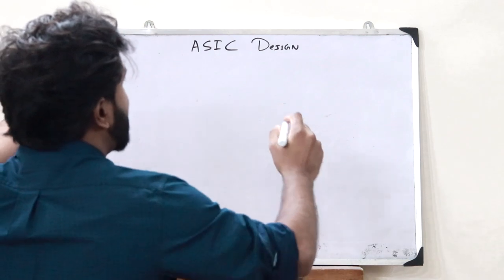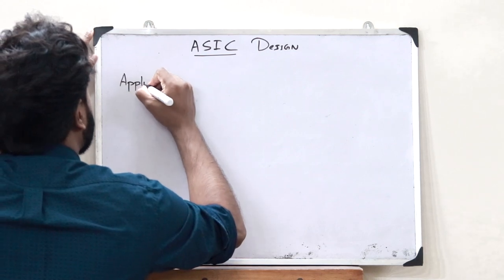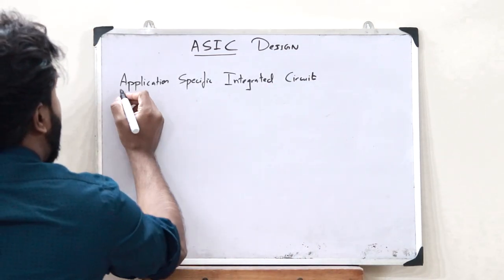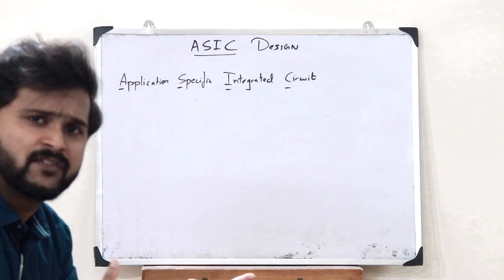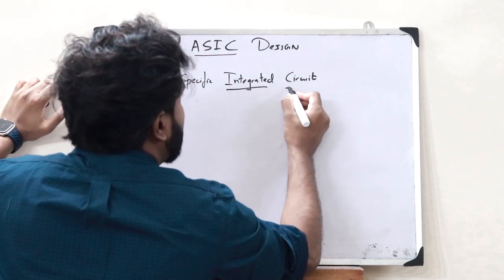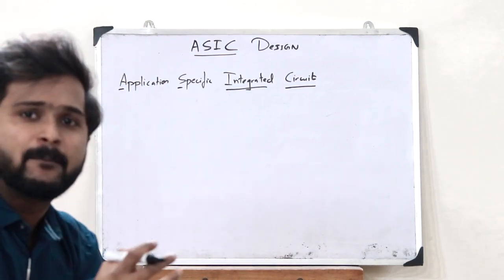What do you mean by the term ASIC? My name is Rishi Ramjo. Welcome to the Backbench Engineering Community where I make engineering easy for you. ASIC is the abbreviation given for Application Specific Integrated Circuit. Just like the name suggests, this is a type of integrated circuit or an IC that is designed for a specific application only.